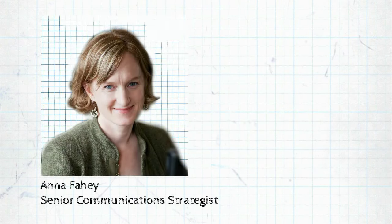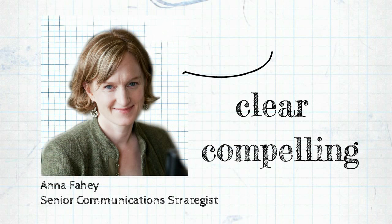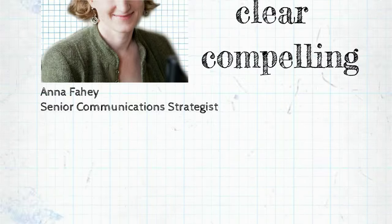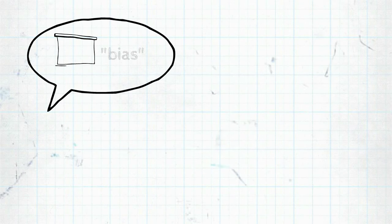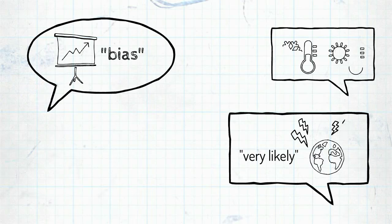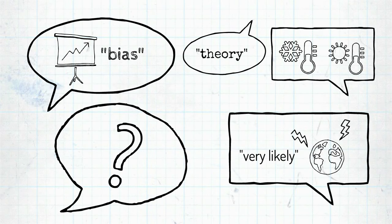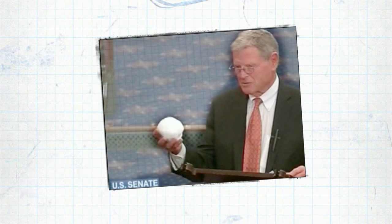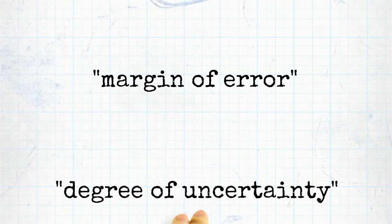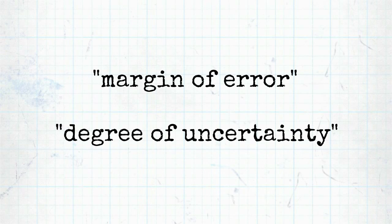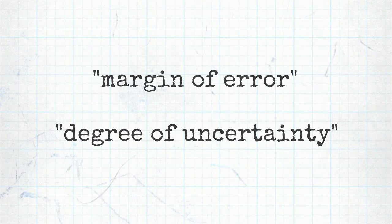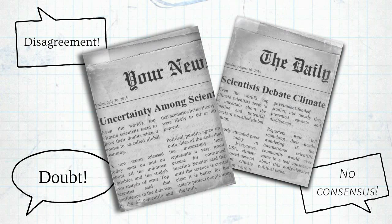Let's face it, nobody speaks in perfect sound bites. But being ready with clear, compelling messages can go a long way. When we load our science communications with too many qualifications, the main point can get lost. Non-scientists are left wondering if we said anything definitive at all. And part of the problem is that political opponents of climate solutions will use almost anything — even familiar scientific disclaimers like margin of error and degree of uncertainty — to make people think that scientists are unsure of their findings.